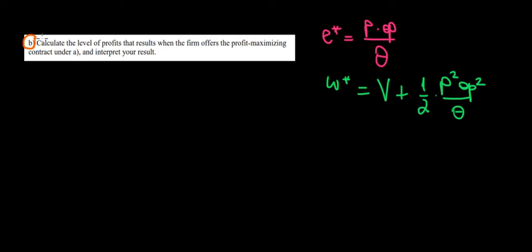Let's work on part B now. Calculate the level of profits that result when the firm offers the profit maximizing contract. What does it mean? It means we have to use the data that we found in the previous video, which was the optimal effort level, the optimal wage level. With that said, what's going to be the profit?